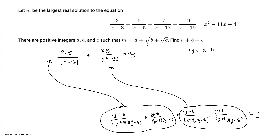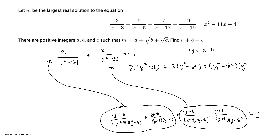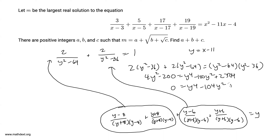This is just a quadratic in terms of y². Cross-multiplying to eliminate fractions: 2(y²-36) + 2(y²-64) = (y²-64)(y²-36). The left-hand side becomes 4y² - 200, and the right-hand side becomes y⁴ - 100y² + 2304. Thus we get 0 = y⁴ - 104y² + 2504.